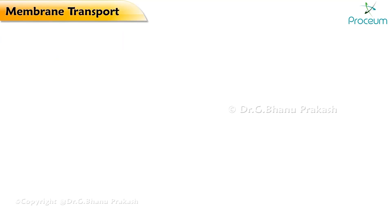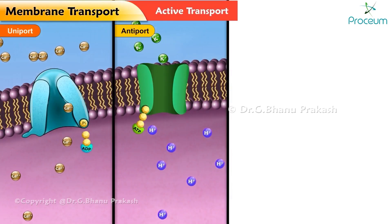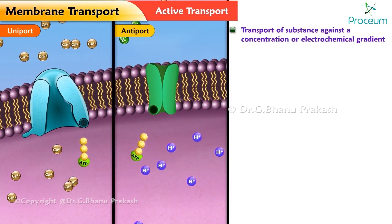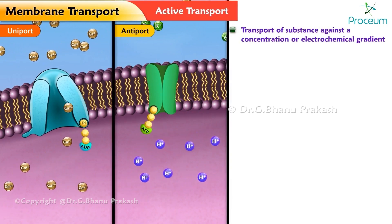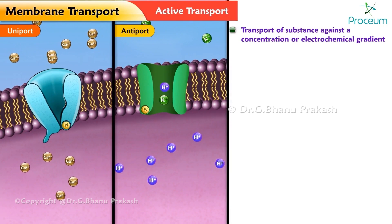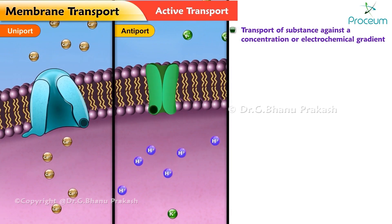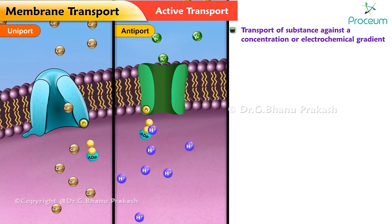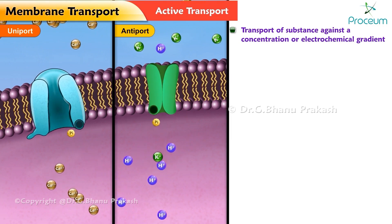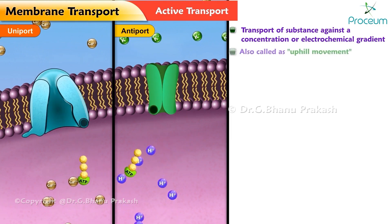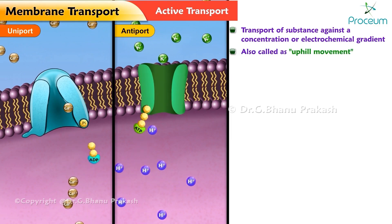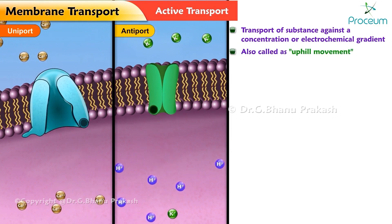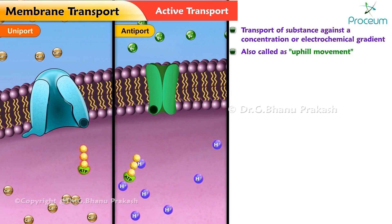Now we'll move on to active transport. Active transport is a type of transport of substances against a concentration or electrochemical gradient, i.e., from low concentration to high concentration. Therefore, it is often referred to as uphill movement.